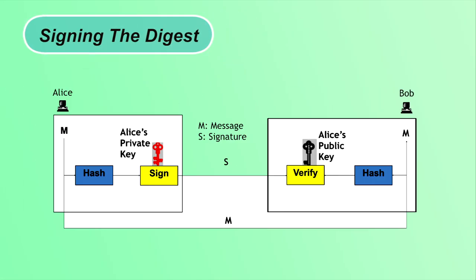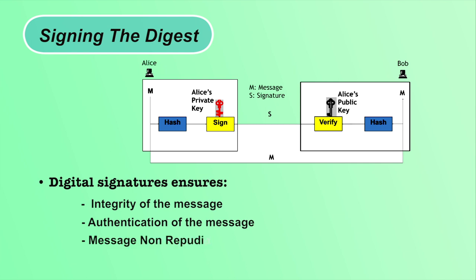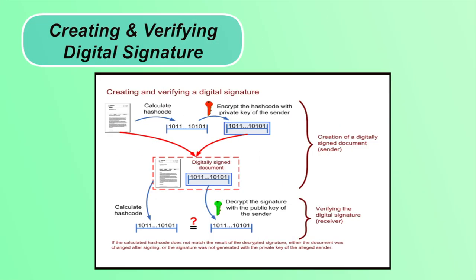The process of signing the digest involves encrypting the hash value of a message using the private key of the sender. At the receiver side, the hash value is decrypted using the public key of the sender. In this way, digital signature ensures message authentication, message integrity — because we cannot get the same signature if the message is changed — and non-repudiation, because the sender cannot deny sending the message if he has signed it with his private key. Note: asymmetric key cryptography uses public and private keys of the receiver, whereas digital signature uses the private and public keys of the sender.